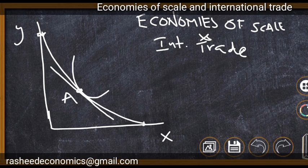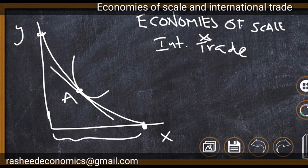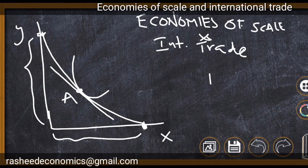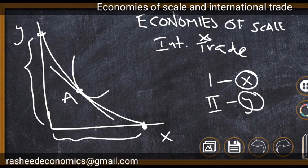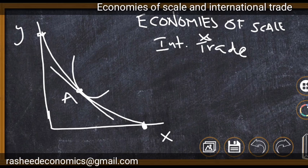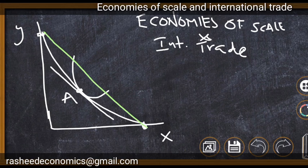In this situation, a country completely specializes in the production of a single commodity. X can be fully produced by one country and another country produces the entire quantity of Y. That means country 1 may be producing X and country 2 may be producing product Y, with each country specializing fully.